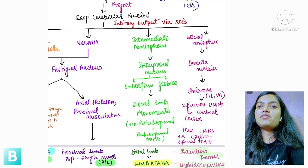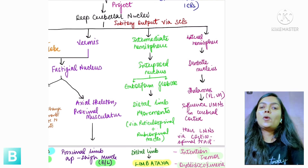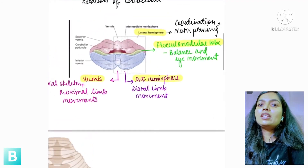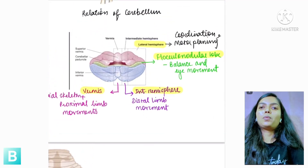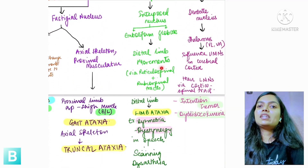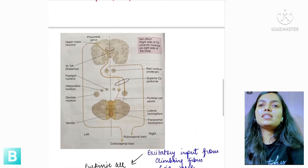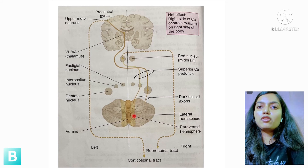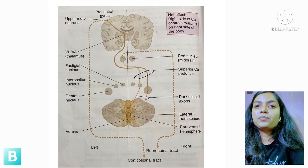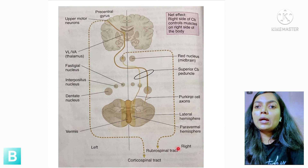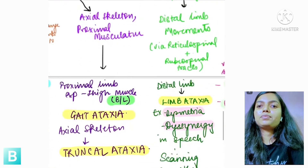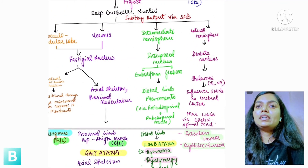The intermediate hemisphere projects to the interposed nucleus — emboliform and globose — and as discussed, the intermediate hemisphere corresponds to distal limb movements. It controls distal movements via the reticulospinal tract and rubrospinal tract. Specifically, the intermediate cerebellar hemisphere projects to the interposed nucleus, then to the red nucleus in the midbrain, and from there along the rubrospinal tract.